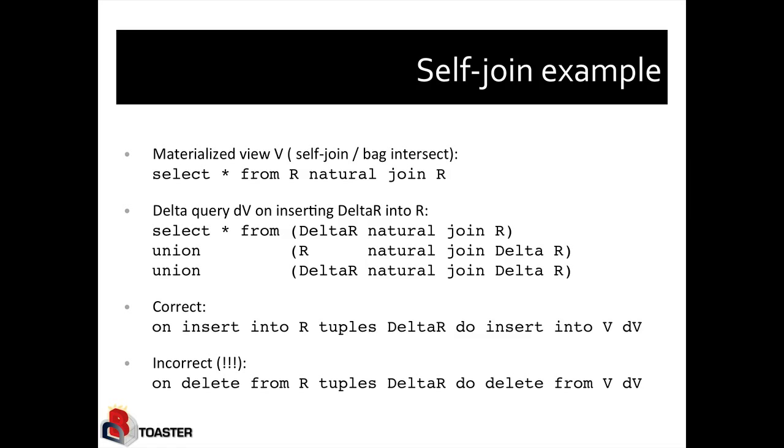So in this case, the delta query is more complicated, and I can write it down here as the union of three natural join queries: delta R with R, R with delta R, and delta R with delta R. So we will see later why this is true.